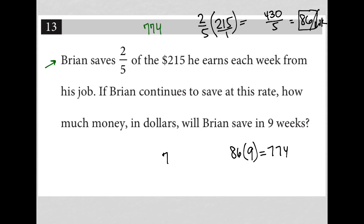So Brian will save $774 over nine weeks if he's saving $86 a week, which again we got from actually calculating what two-fifths of $215 actually was.